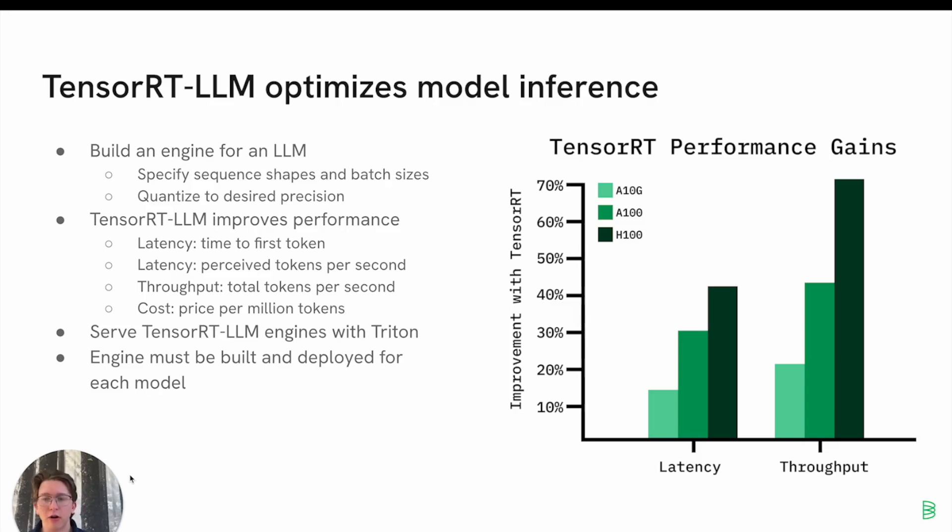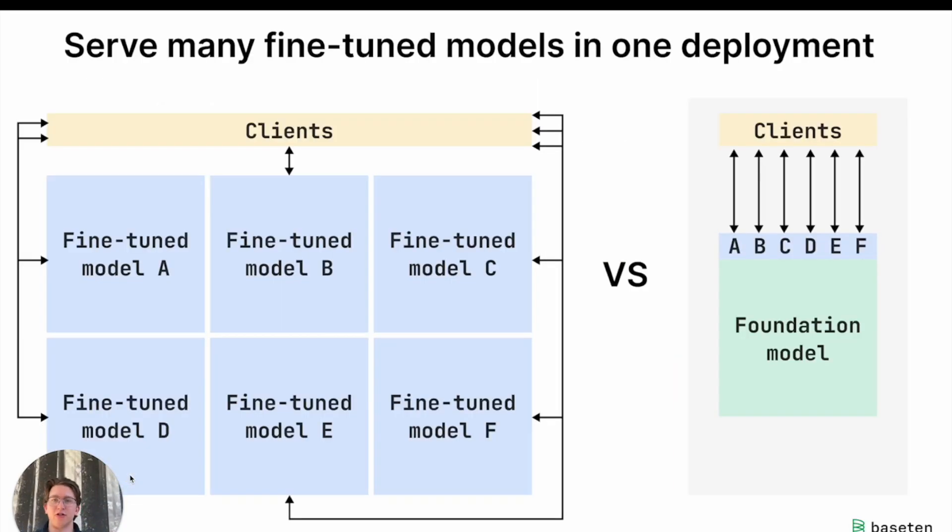You don't have to use this. You can use VLLM, TGI, any of the other options. But these engines are a great option for serving models in production. The issue is each one of these engines has to be built for a specific model. So if you build it for one fine-tuned model, you're going to have to build another one for the next and for the next.